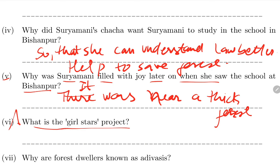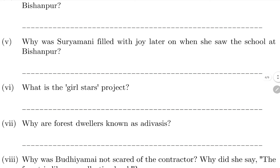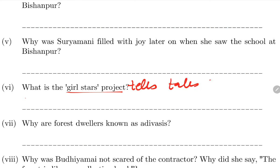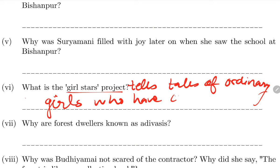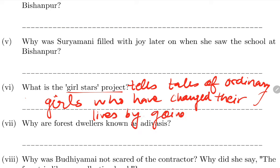What is the Girl Star Project? The Girl Star Project is a project which tells tales of ordinary girls who have changed their lives by going to school. Many girls went to school, changed their lives, and this project documents their stories.